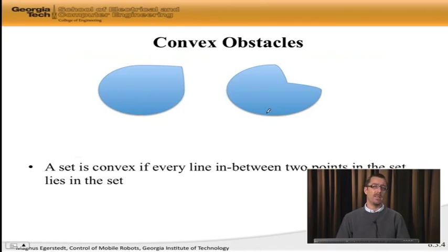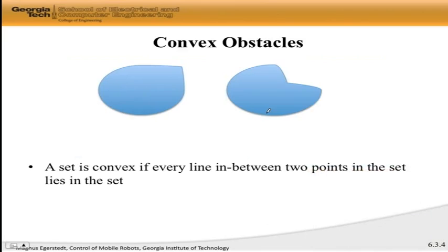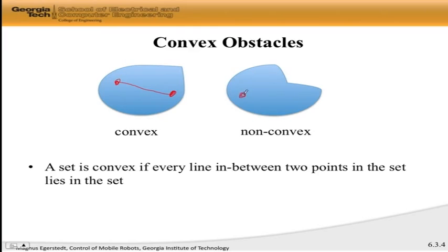The next level up in complexity is convexity versus non-convexity. On the left you see a convex obstacle — it looks like a circle or disc being squished a little bit. What makes it convex is that if I take any two points inside this obstacle and draw a line between them, that line lies entirely inside the obstacle. If I take the right obstacle, which is not convex, I can find two points where the connecting line actually falls outside the obstacle. So a set is convex if every line between two points in the set lies entirely inside that set. We're going to start with convex obstacles as the first step up from circles.